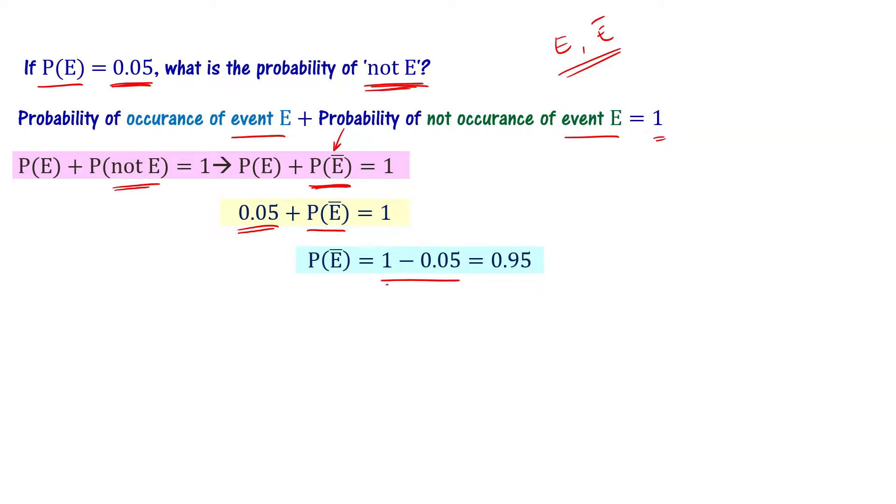That equals 0.95. So, P(not E) is equal to 0.95. The probability of event not E is 0.95.